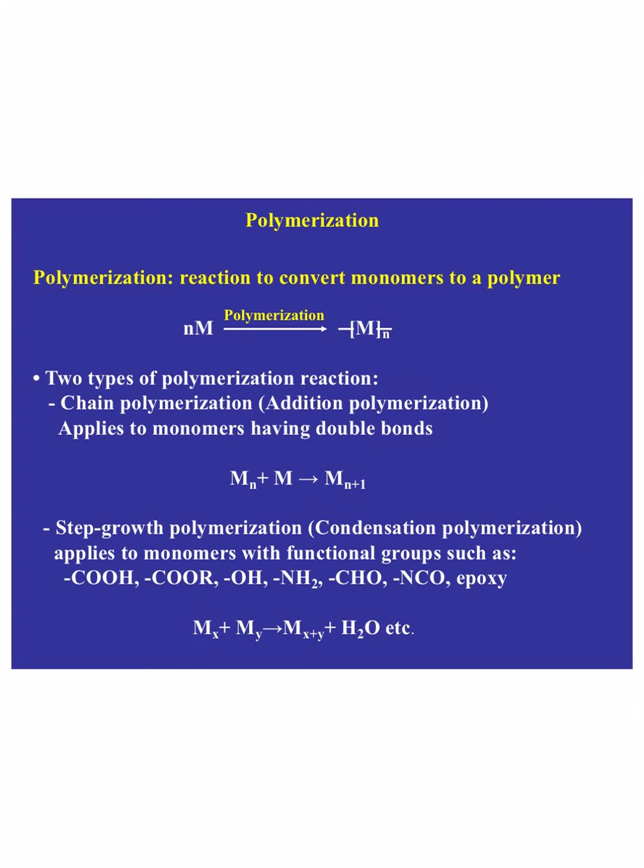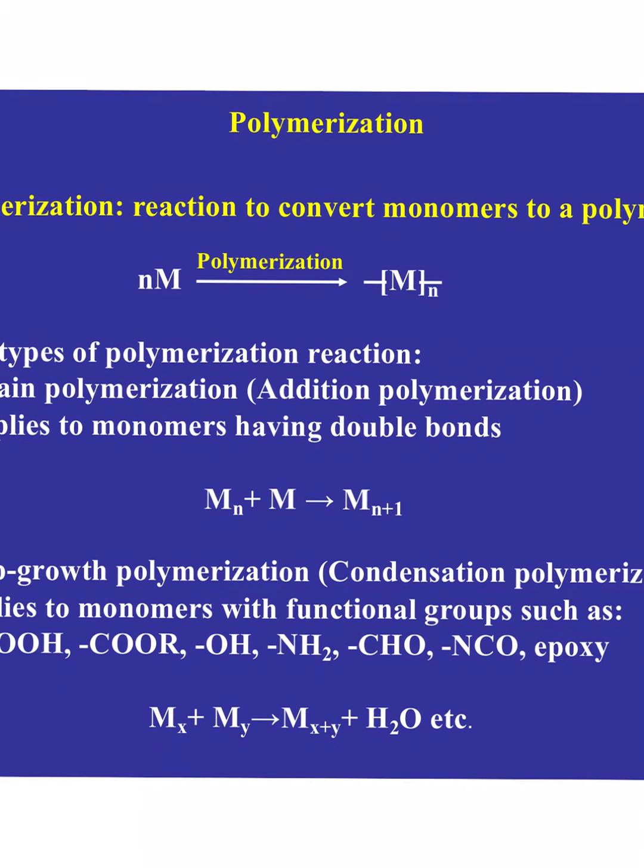Today we're going to delve into more details of polymerization. As you talked about last time, there's this process of taking monomers and turning them into a polymer, and there are restrictions in terms of how we can do that — restrictions especially of purity. Everything goes to hell in a handbag if the purity is even a little bit off, and we're going to hear more about that type of detail today.